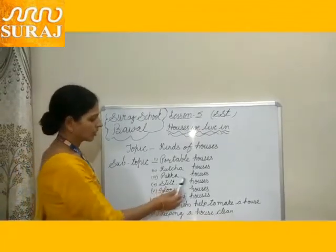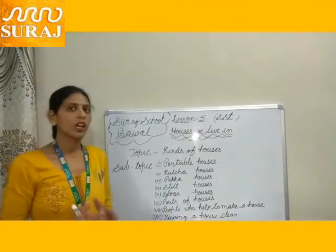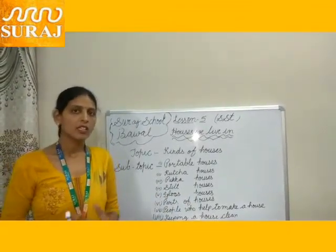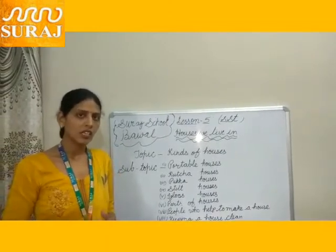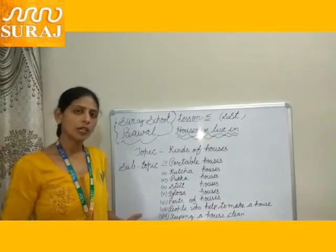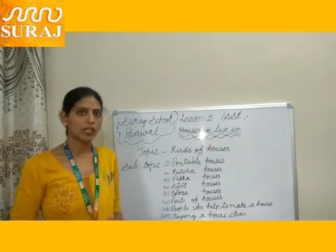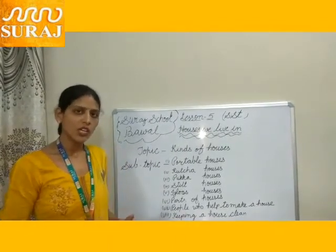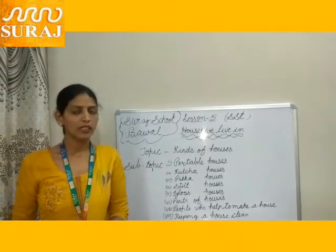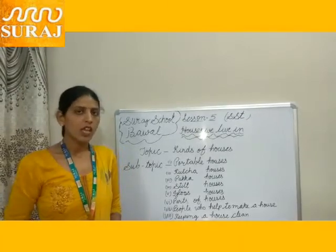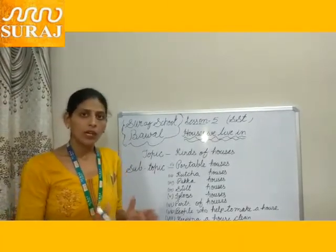Paka house. Houses made of iron, cement, concrete, steel, and wood are called paka houses. They are stronger than portable and kacha houses. Paka houses are of many types: a single house and a bungalow.